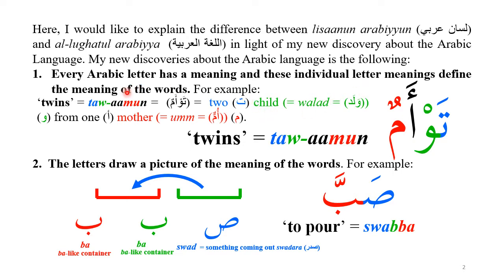My first discovery is that every Arabic letter has a meaning. For example, 'tawamun' means twins. How does it define the word for twin? 'Ta' means two, 'ya' is walad (child), and 'alif' means umm (mother). So: two children from one mother — this defines the word twins.